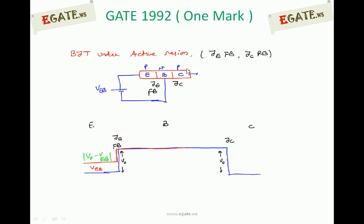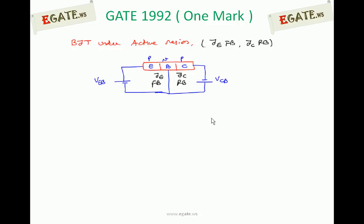Now we apply reverse bias to the collector base junction. For a PNP transistor, this means applying a negative voltage VCB. This external voltage VCB makes the collector base junction reverse biased. Under reverse bias, the potential barrier increases — both the height and width of the potential barrier increase. The height becomes V0 plus VCB and the width of the depletion region also increases, so we must show this width in the diagram, since it was neglected under open circuit but now it is increasing.